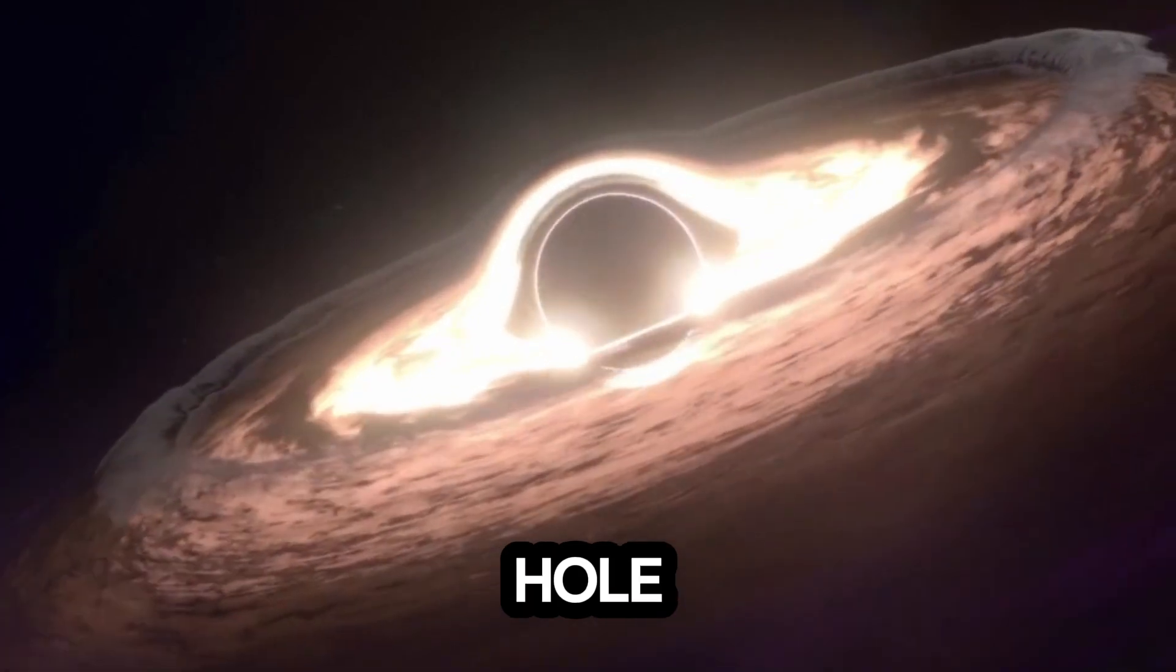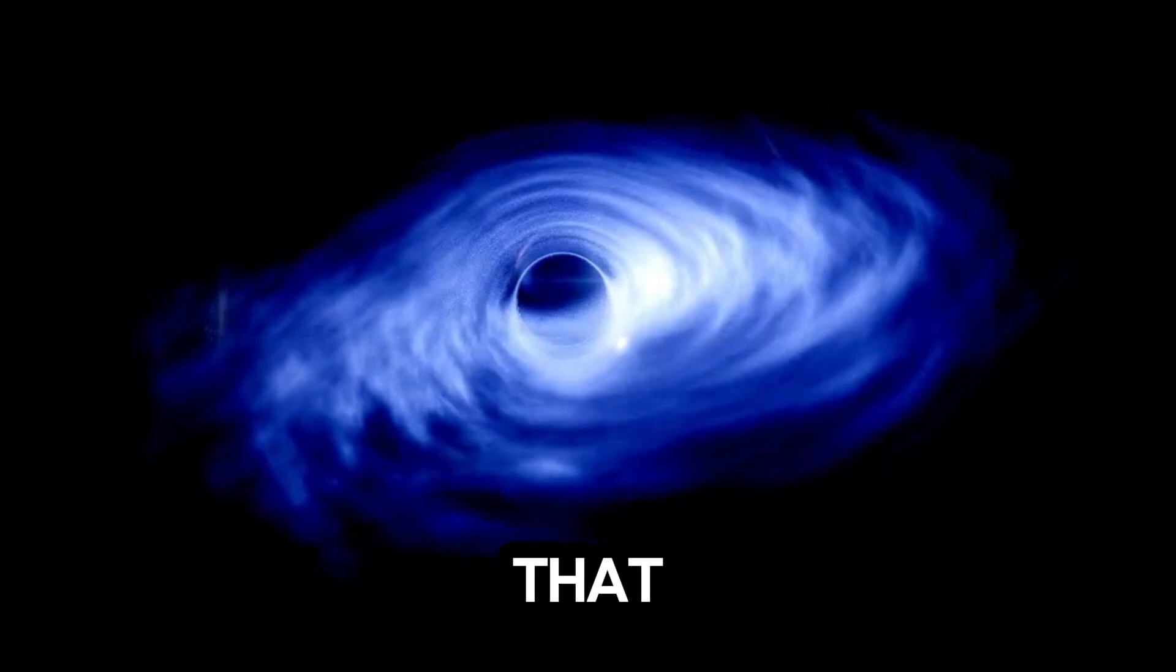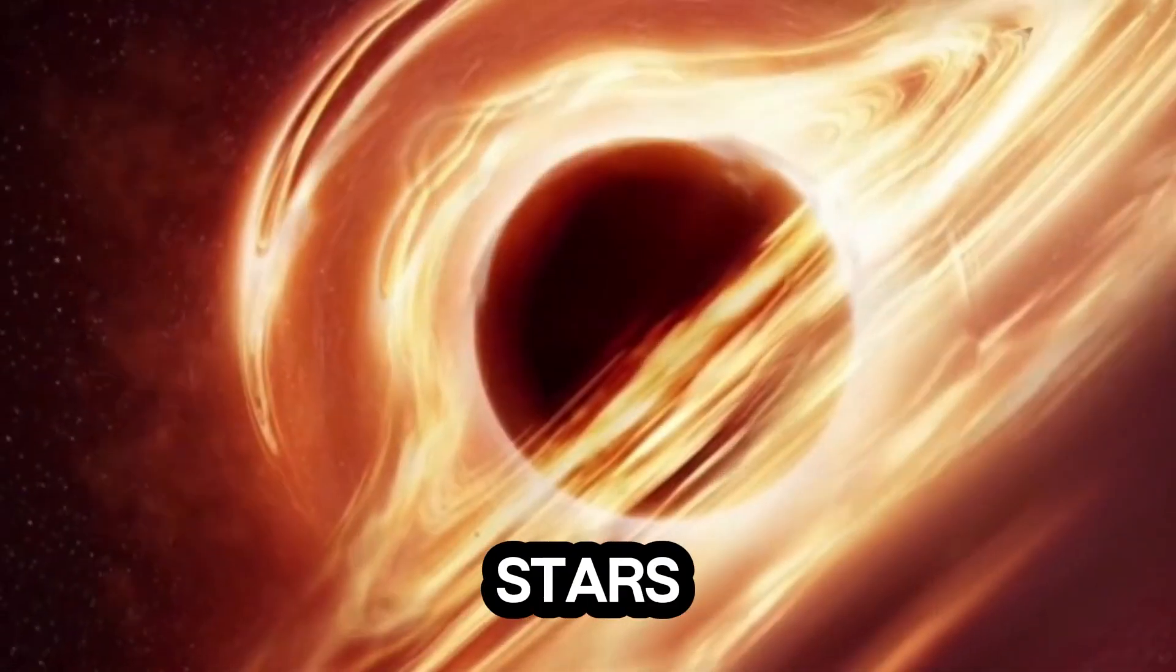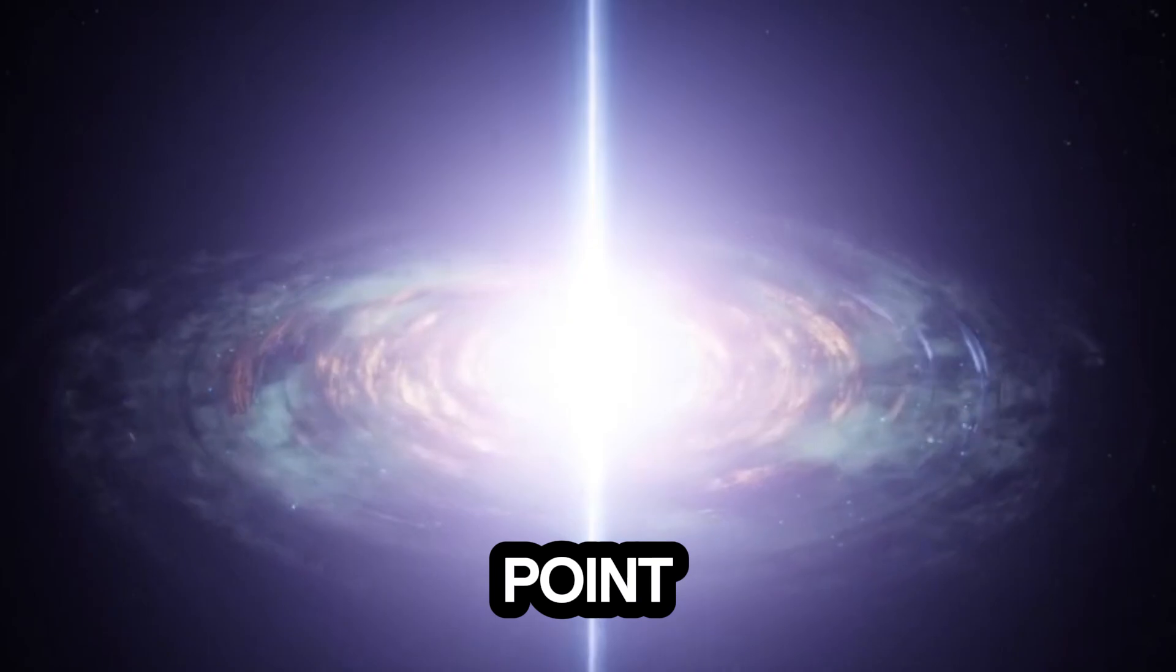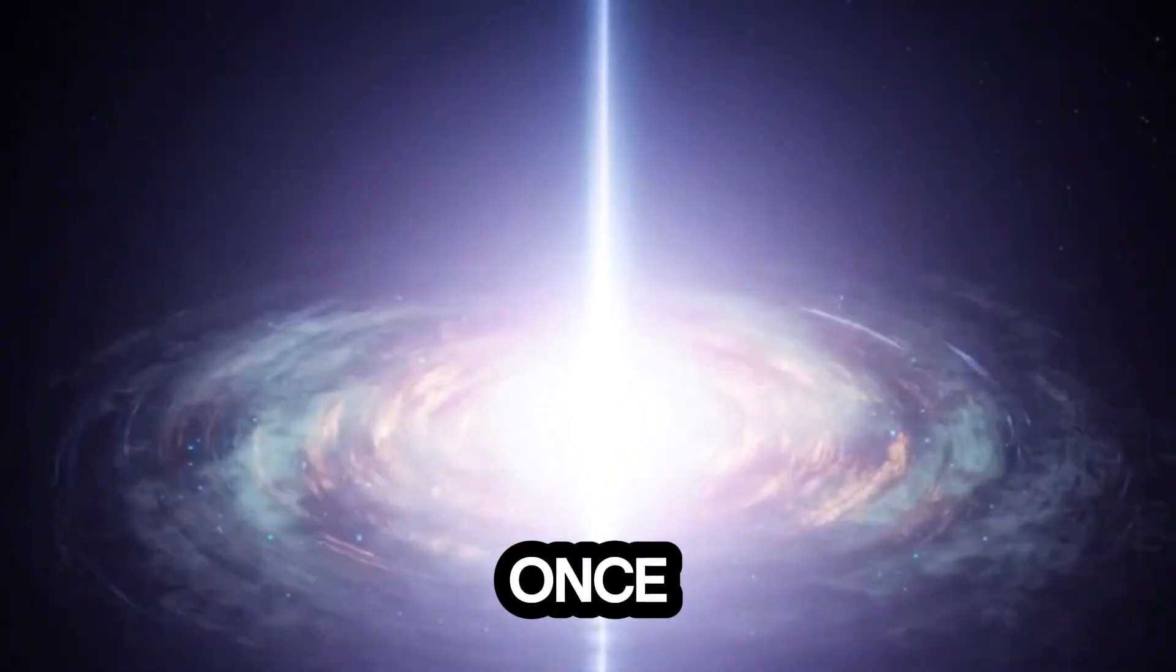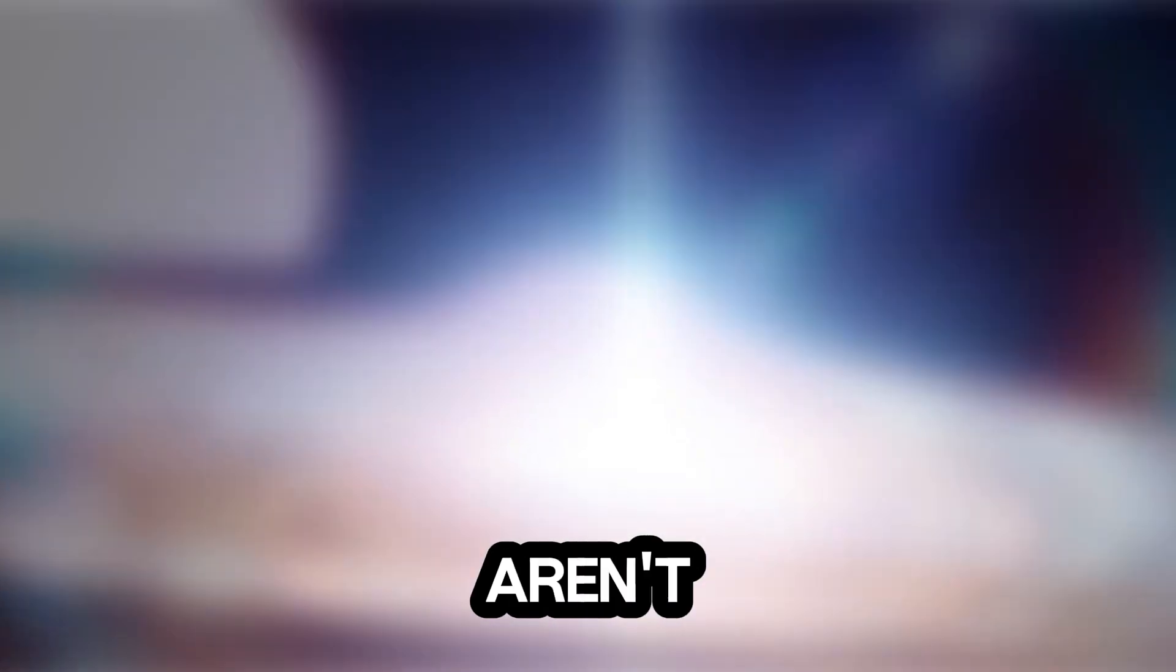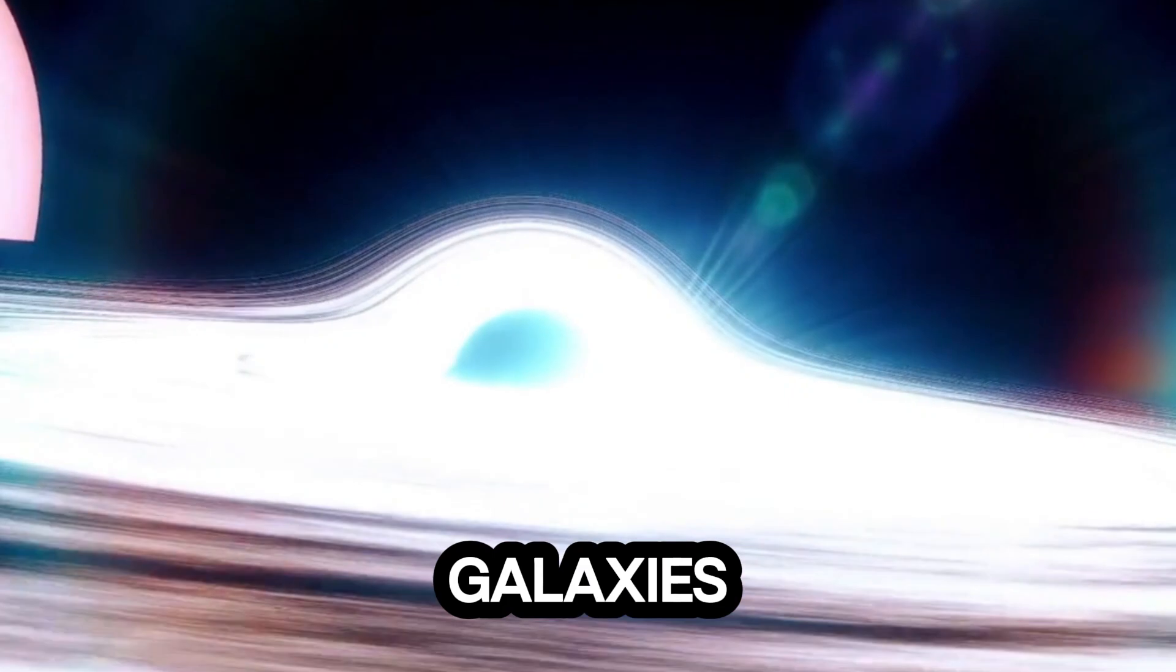What is a black hole? A black hole is a region in space where gravity is so strong that nothing, not even light, can escape. They form when massive stars collapse at the end of their life cycles. The most dangerous part: the event horizon, the point of no return. Once anything crosses this boundary, it's gone forever. But black holes aren't just cosmic monsters. They play a crucial role in shaping galaxies and influencing the universe as we know it.